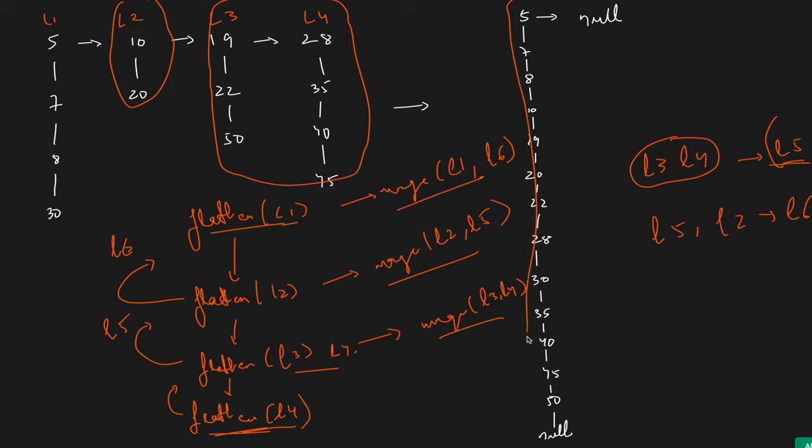The time complexity is the summation of total nodes across all linked lists, since we traverse through all the nodes. The space complexity is O(1) because we are using the same pointers and the same nodes to flatten them into a single linked list — no new nodes are created.